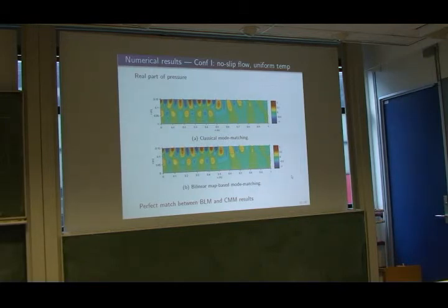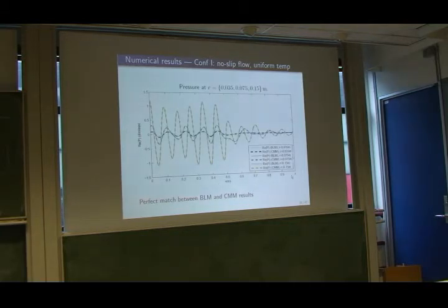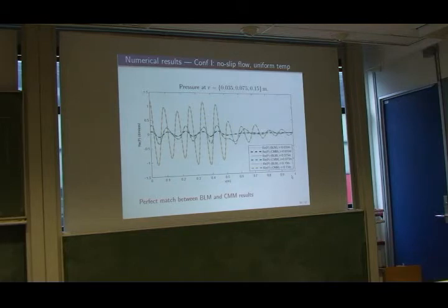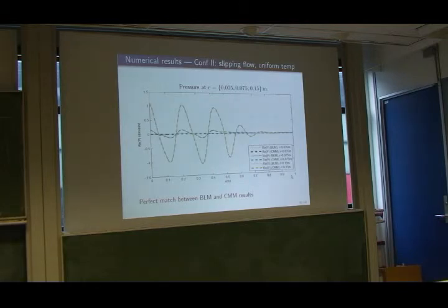Comparing classical and bilinear map-based mode matching, the real part of the pressure shows no visible difference between the two methods. Looking at the field along a cross-section at radii of 3.5 cm, 7.5 cm, and 15 cm, the real part of pressure and the velocity components are computed for both methods. The dotted and continuous lines always lie exactly on top of each other — a perfect match.